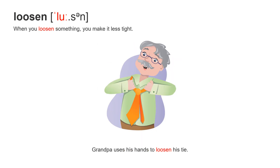Next word: loosen. Two syllables, accent on the first syllable — loosen. When you loosen something, you make it less tight. Grandpa uses his hands to loosen his tie. Loosen.